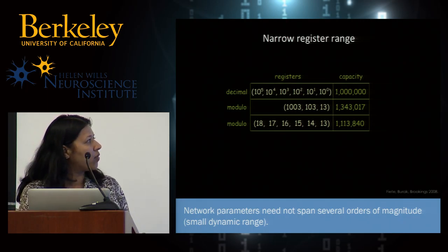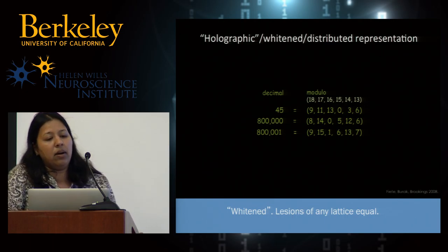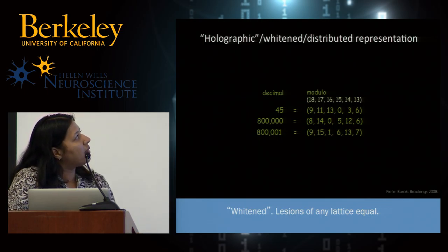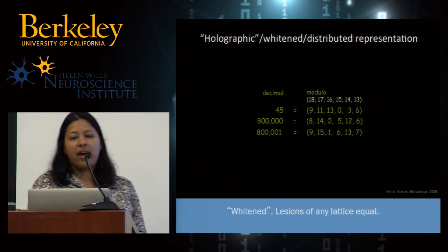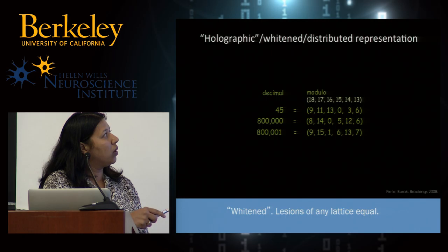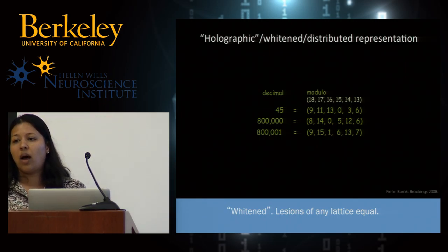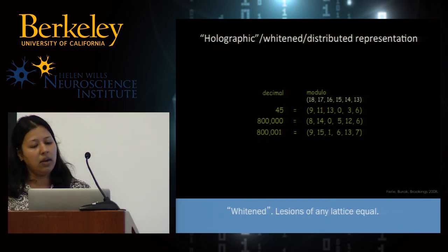With roughly equal-size moduli, the network parameters don't need to span several orders of magnitude and require only a small dynamic range. It's also a very distributed and whitened representation, as discussed in the context of holographic representations. In a decimal representation, a shift from 800,000 to 800,001 only changes the unit register. By contrast, in the modulo representation with roughly equal size moduli, that shift involves changes in all the moduli — it's very distributed and whitened. If you destroy one register in decimal, you destroy information on a specific scale; in modulo, you destroy information on all scales equally.